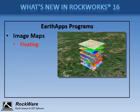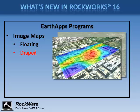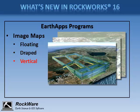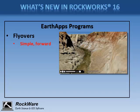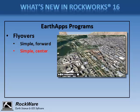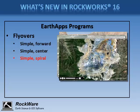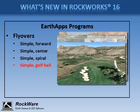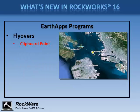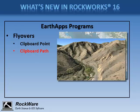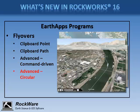If you have raster images such as JPEGs or PNGs, you can display these as floating or draped along the ground, as vertical images for cross sections, and as legends in Google Earth. The flyover menu creates simple to complex flyovers for display as tours in Google Earth. You can create simple forward-looking flyovers, centered-facing flyovers, flyovers spiraling in from space, parabolic golf ball paths, and virtual tours between XYZ points. You can also copy a place mark or path in Google Earth to create a quick flyover, as well as command-driven and advanced circular flyovers.